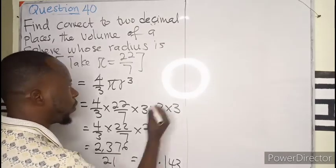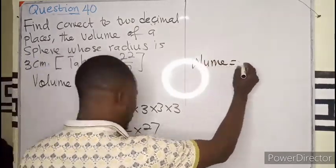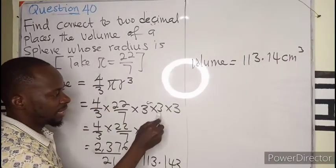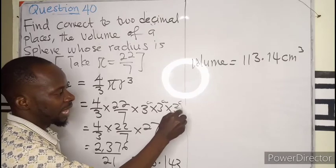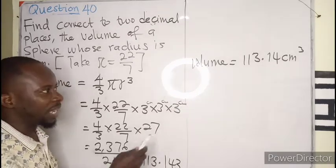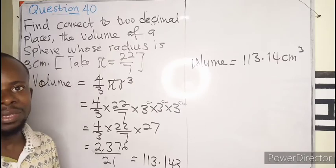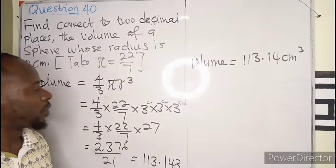So our answer, the volume, this is 3 cm times 3 cm times 3 cm, that will be cm exponent 3, that is cm cubed. So this is question number 40.